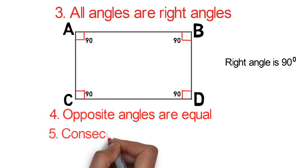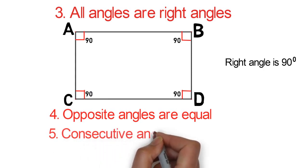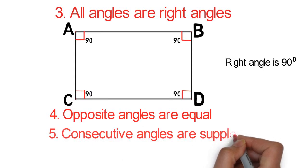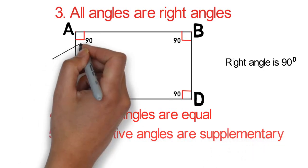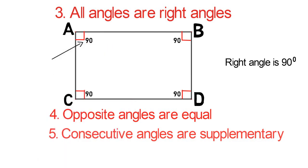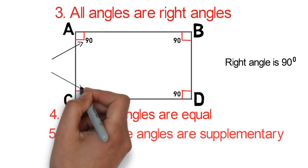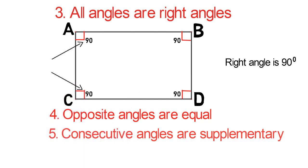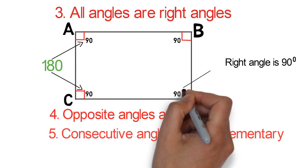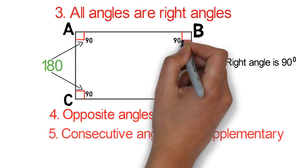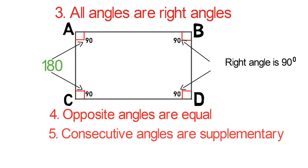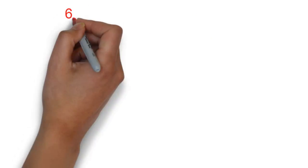Five: consecutive angles are supplementary. What do I mean by this? It means angles next to each other, when added together, equal 180 degrees. So if I say angle A plus angle B, that's 90 plus 90 equals 180 degrees. If we pick any two angles next to each other and add them, we always get 180 degrees.